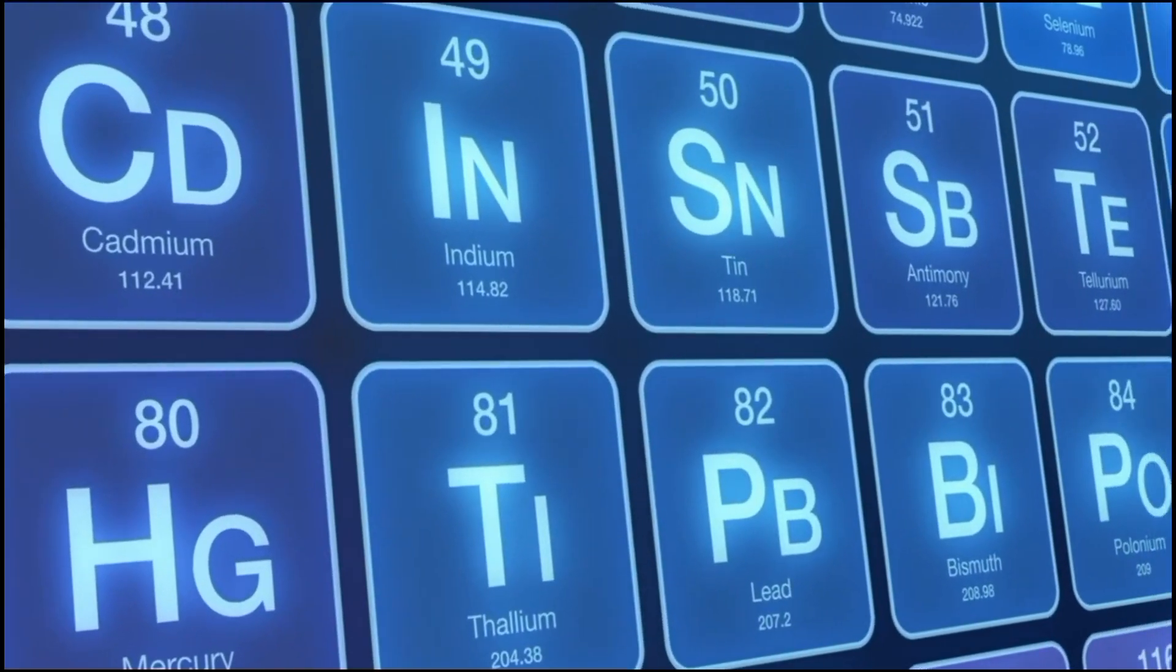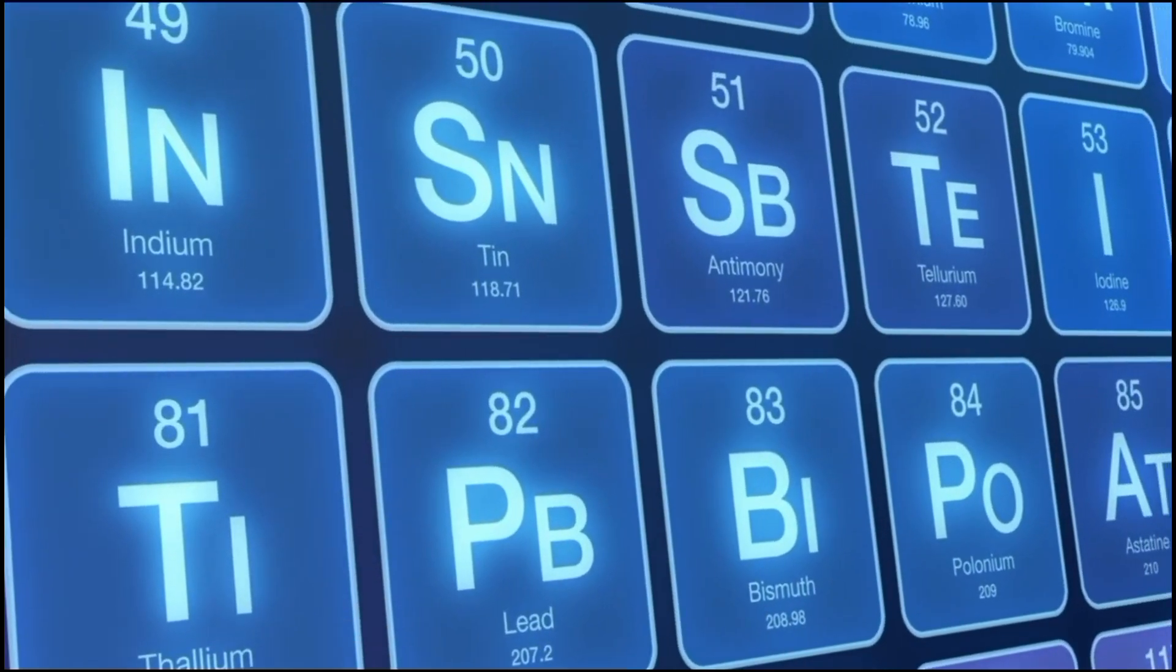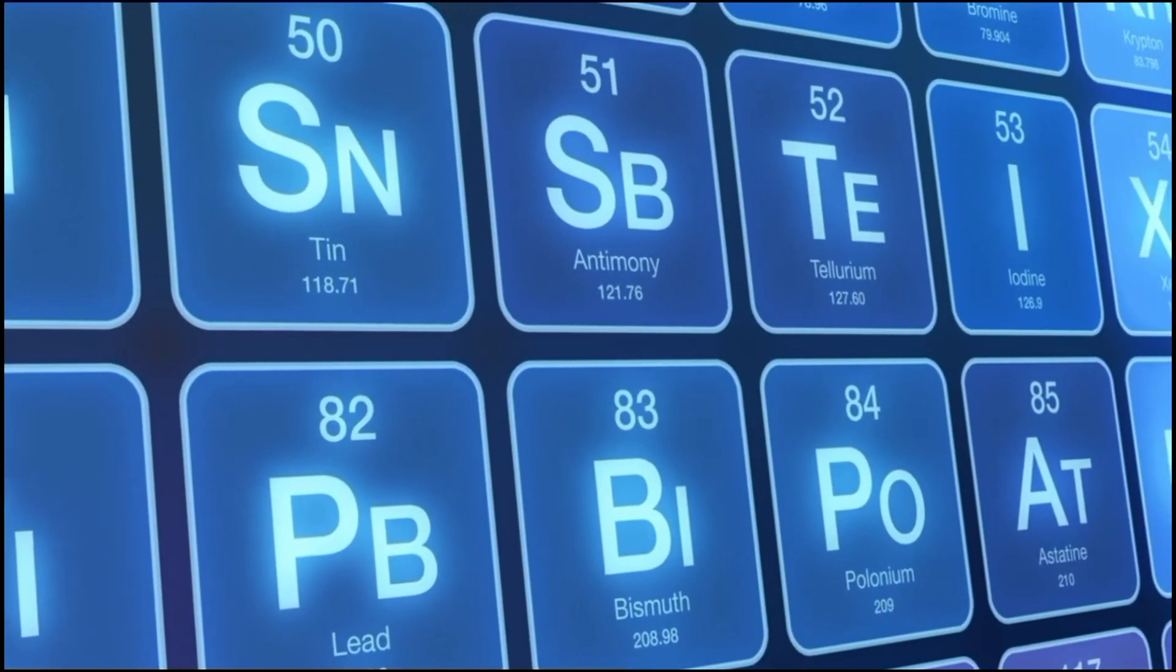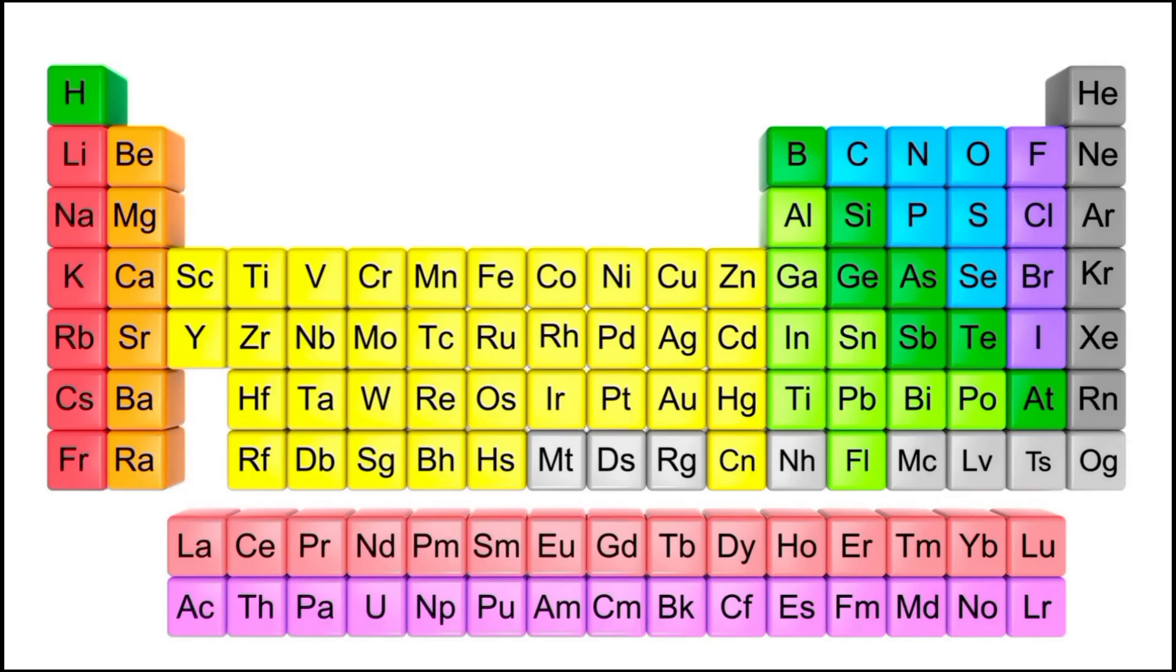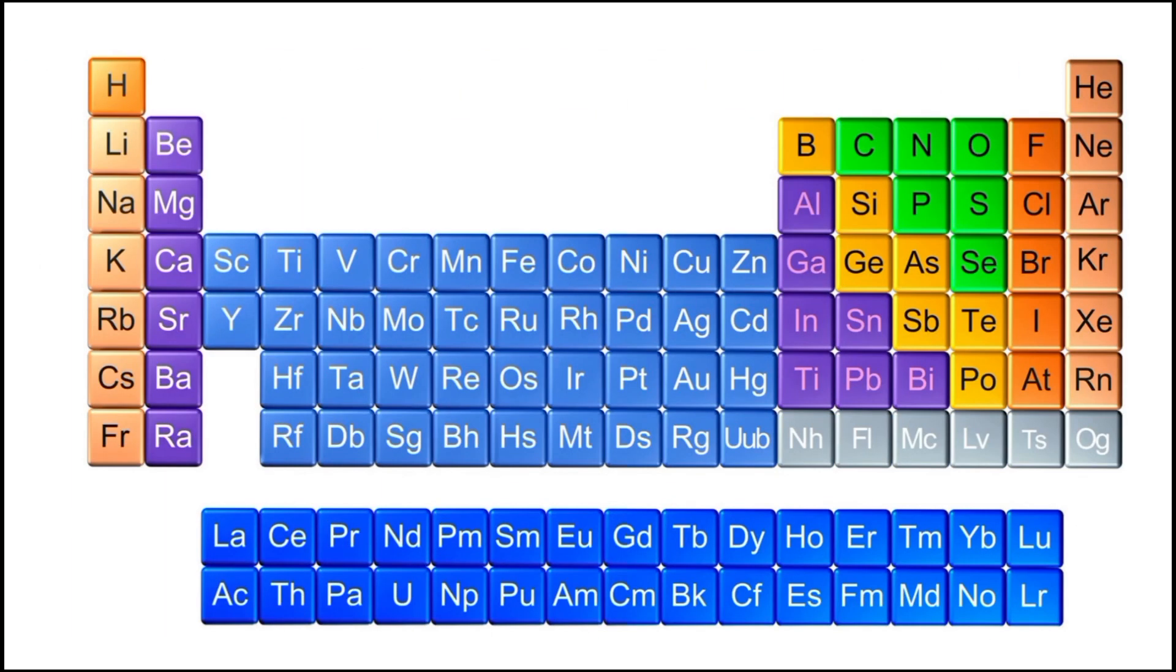The periodic table also provides insights into the properties of transition elements, rare earth elements, and noble gases. Transition elements are known for their variable oxidation states and their involvement in catalysis. Rare earth elements, belonging to the F block, have unique magnetic and luminescent properties. Noble gases, occupying group 18, are chemically inert due to their stable electron configurations.